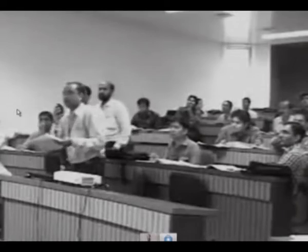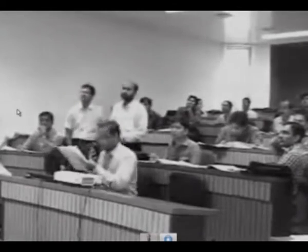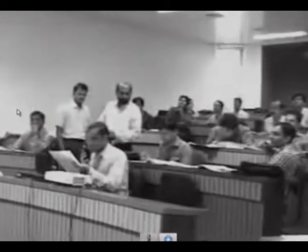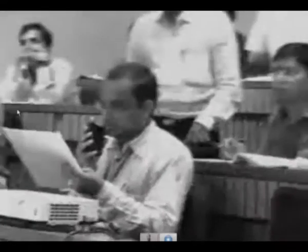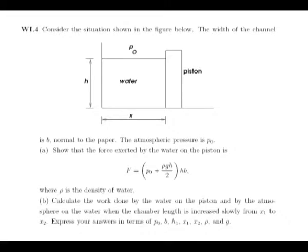Hello Nirma, do you have any questions? Yes sir, in exercise number four, part B: calculate the work done by the water on the piston and by the atmosphere on the water, when the chamber length is increased slowly from x1 to x2.